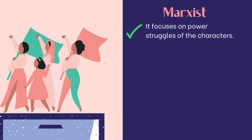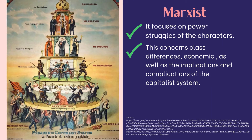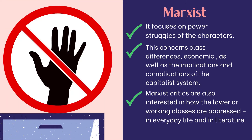Marxist focuses on power struggles of the characters. Ito ay nakatuon sa labanan sa kapangyarihan ng mga karakter sa isang akda. This concerns class differences, economic as well as the implications and complications of the capitalist system. Ipinapakita din dito ang kaibahan ng estado ng buhay ng mga karakter. Marxist critics are also interested in how the lower or working classes are oppressed in everyday life and in literature. Sinusuri din dito ang mga pang-aaping ginagawa sa mga manggagawa o sa mga nasa mababang antas ng lipunan sa akdaman o sa pang-araw-araw.